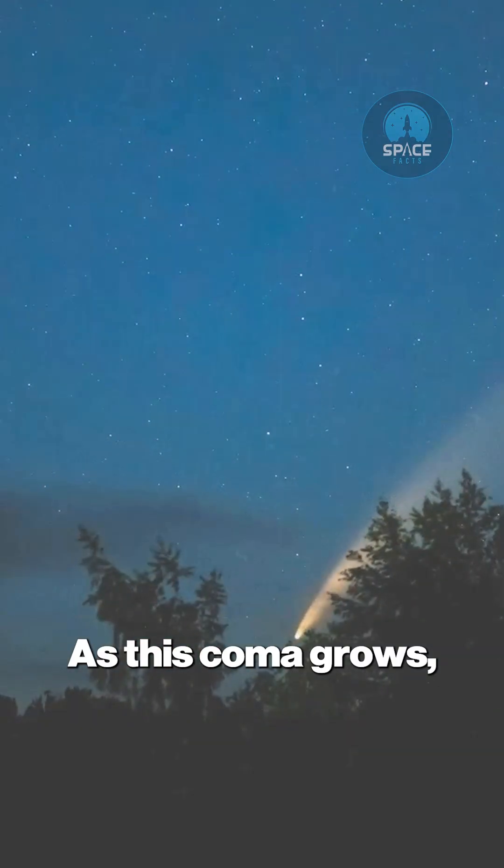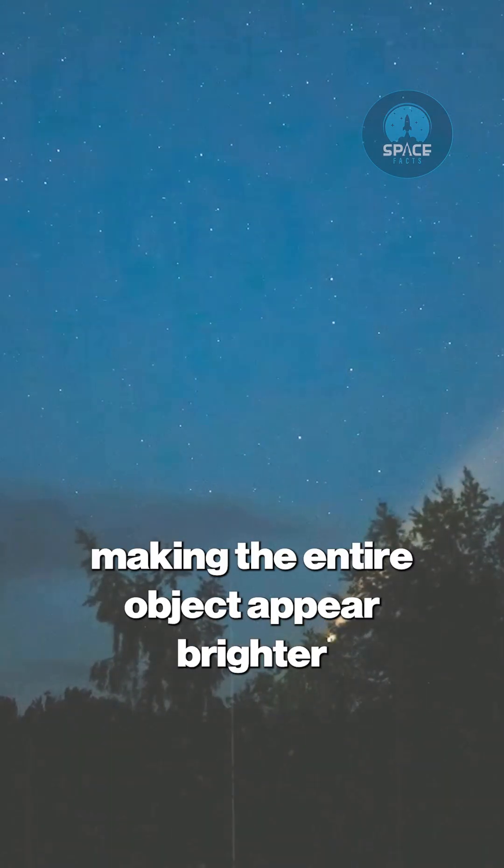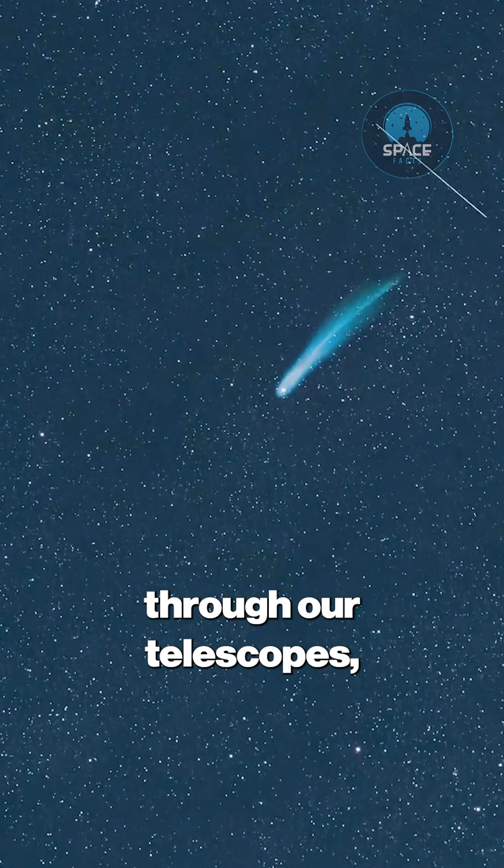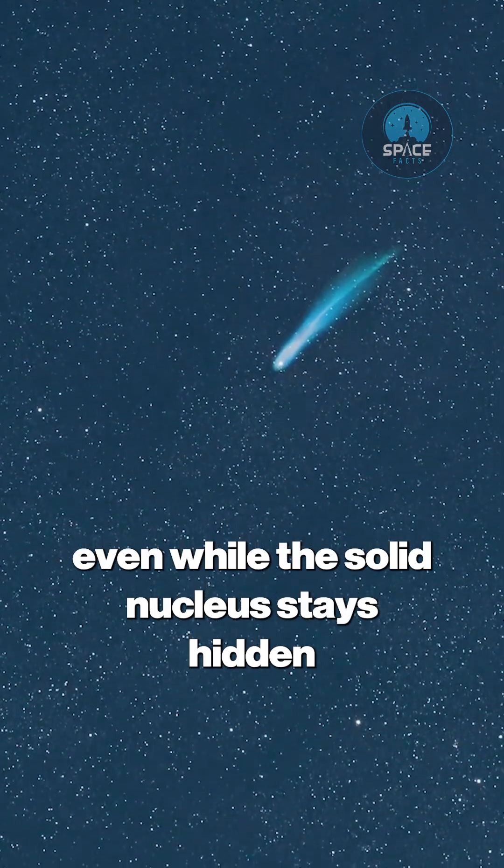As this coma grows, it scatters more sunlight, making the entire object appear brighter through our telescopes, even while the solid nucleus stays hidden deep inside.